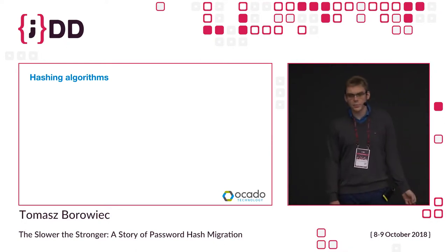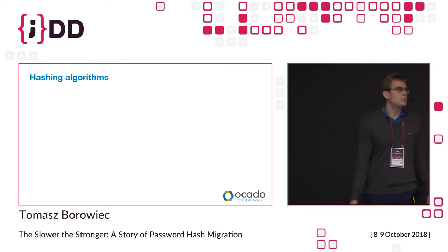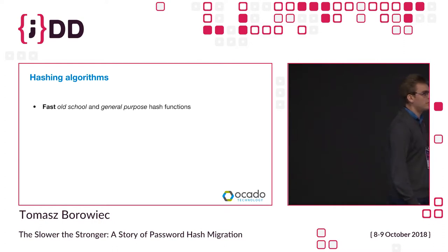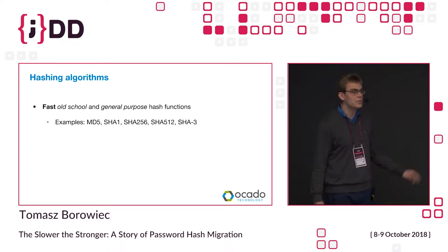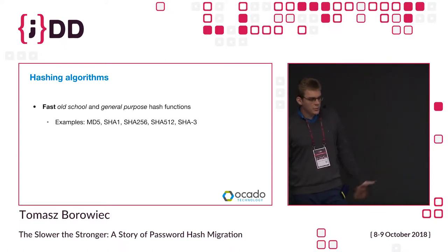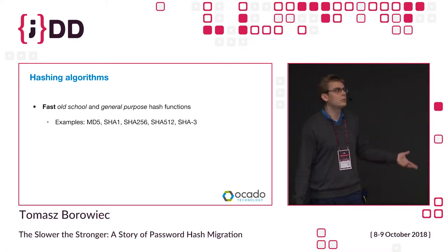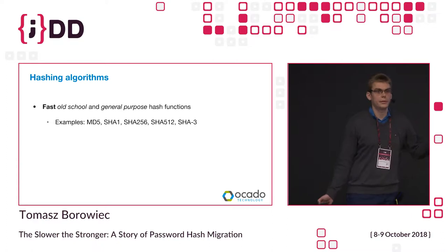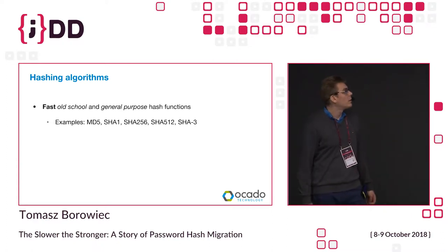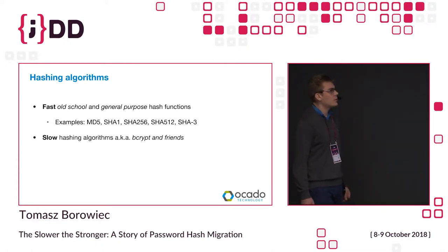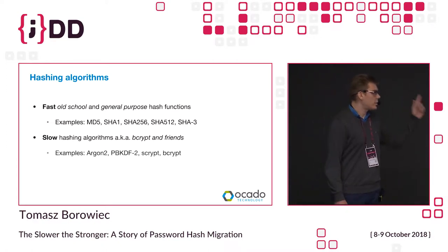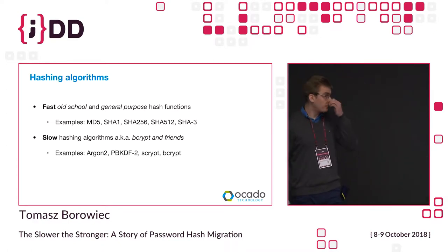Hashing algorithms are basically divided into two groups. The first one is fast, old-school, general-purpose hash algorithms like MD5, SHA-1, and so on. They are not really designed for strings — they're for binary data, and they're great for, say, validating a download. But there are also slow hashing algorithms, also known as bcrypt and friends, which are designed specifically for passwords.